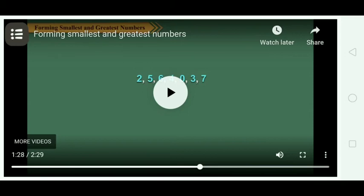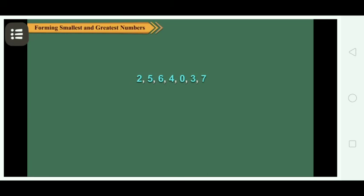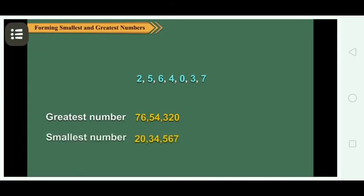Here we get the smallest number starting from 0. The digits in ascending order are 0, 2, 3, 4, 5, 6, 7. Using the given digits, we can write the greatest number as 76,54,320. And for the smallest number, we write 20,34,567, because 0 at the extreme left position is meaningless.